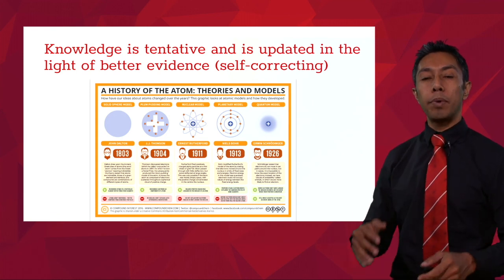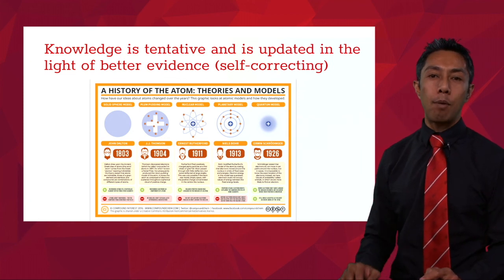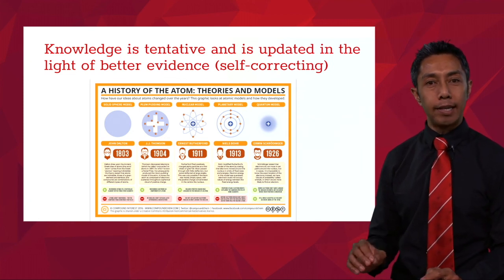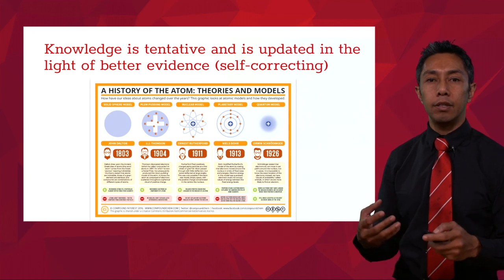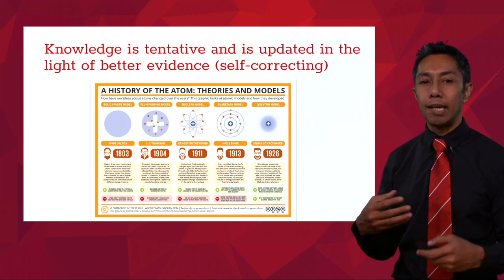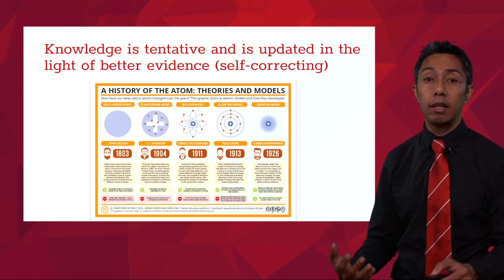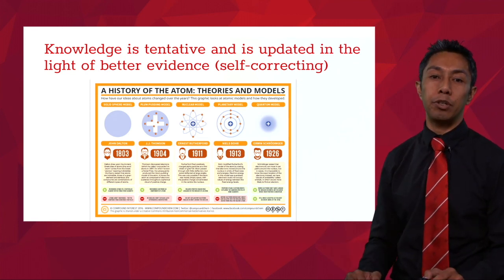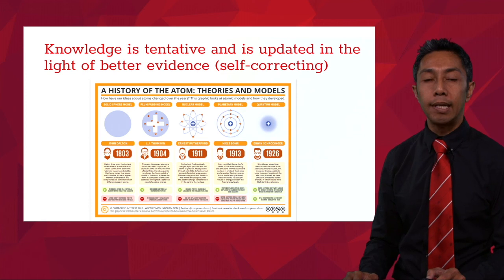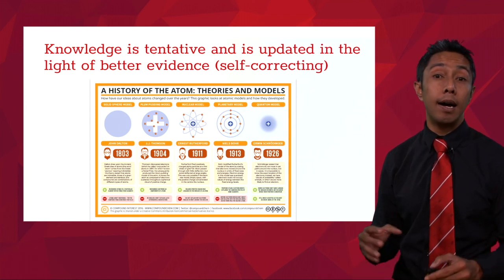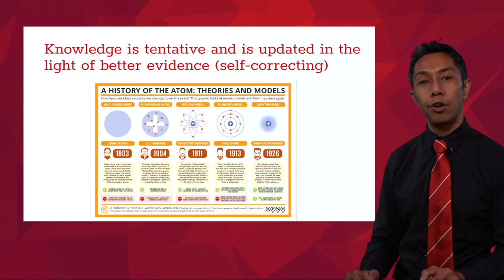When we look at science, they view knowledge in a particular way. One of the key ways that science views knowledge is that scientific knowledge is tentative — it's being updated in the light of better evidence. There are many examples we could use, but here's one: in science, our understanding of the atom has actually changed over time.